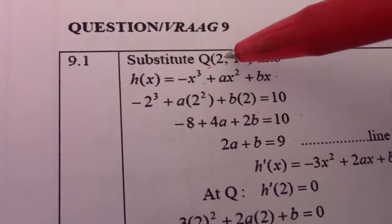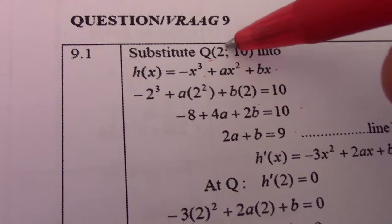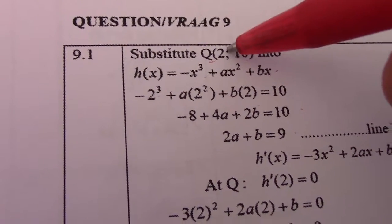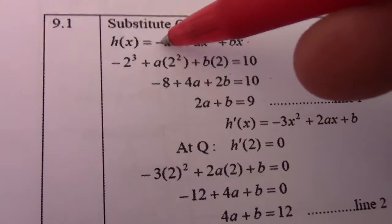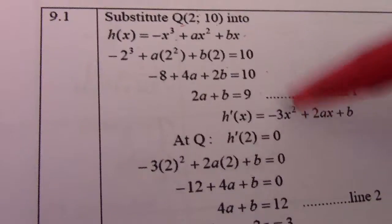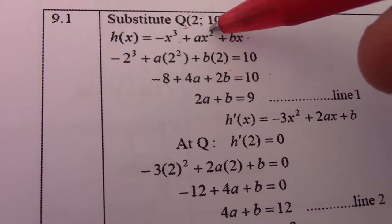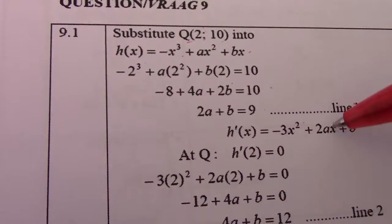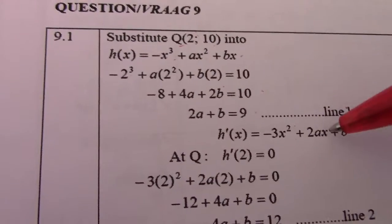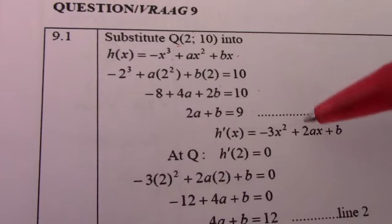Then for the first derivative, when it equals 0, the x value is 2. The derivative h'(x) = -3x² + 2ax + b. So 3 times -1 gives -3x². 2 times a gives 2ax. And 1 times b becomes b.